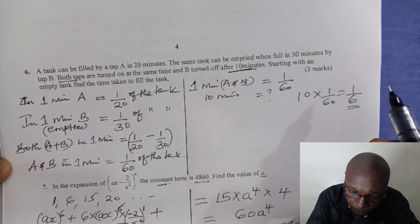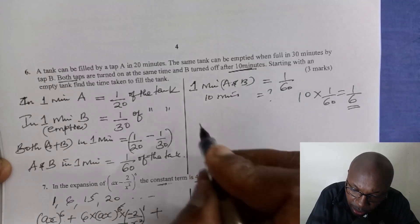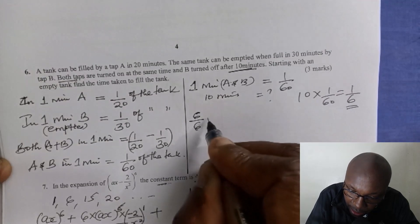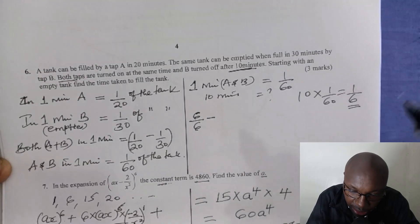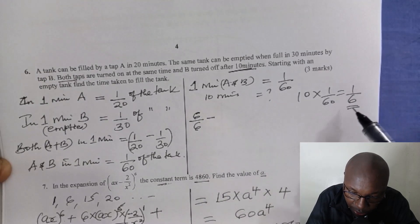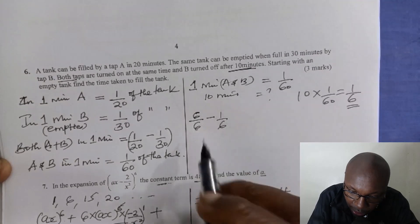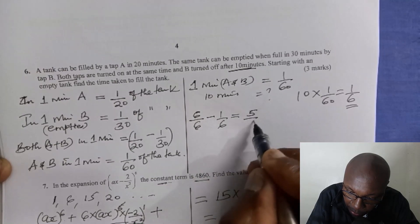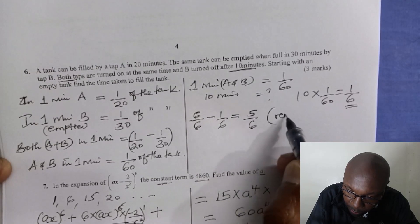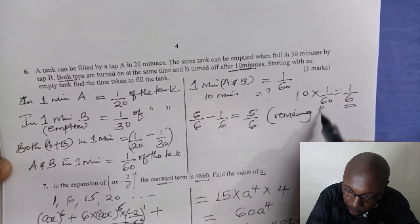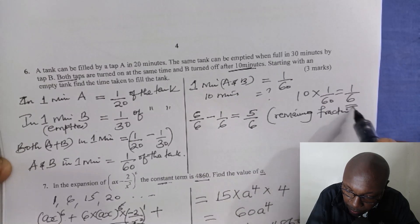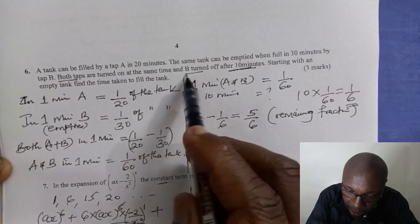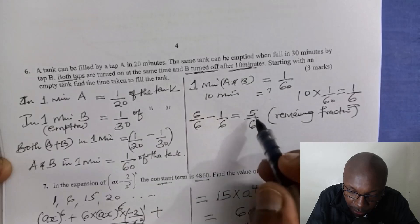We now need to find the remaining fraction of the tank. Assuming a full tank is 6 over 6 or 1, after A and B have filled 1 over 6 of the tank, we subtract: 6 over 6 minus 1 over 6. The remaining fraction to be filled is 5 over 6. This remaining fraction will be filled by A only, since B has been turned off.